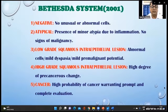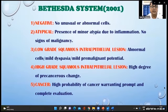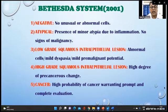The PAP system evaluates the following gradations: negative means no unusual or abnormal cells; atypical indicates presence of minor atypia; then there are low-grade squamous intraepithelial lesions, high-grade squamous intraepithelial lesions, and cancer — which warrants prompt and complete evaluation.